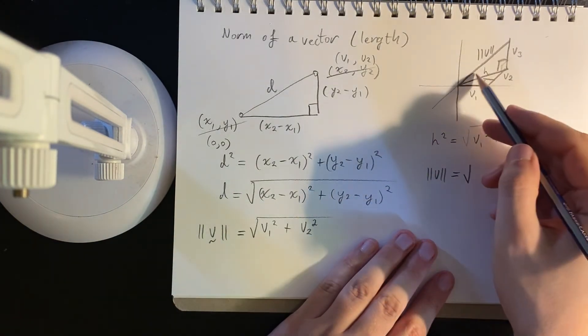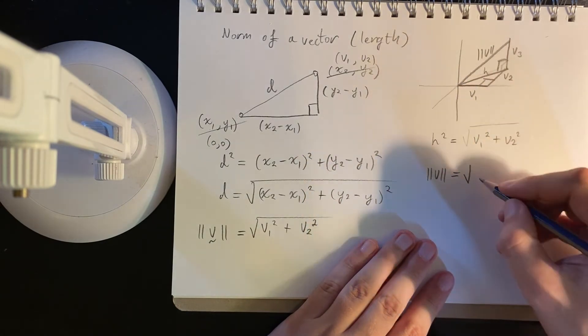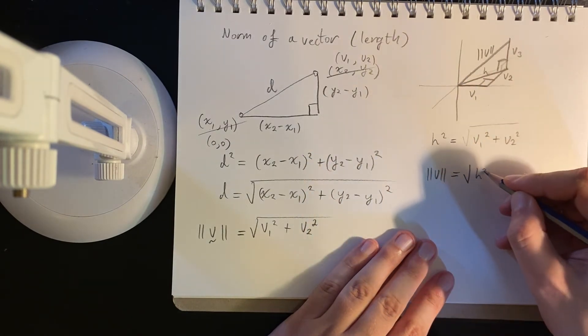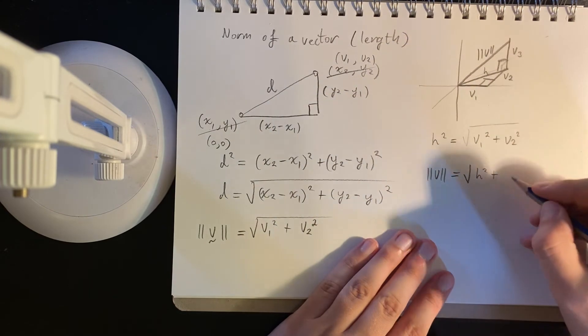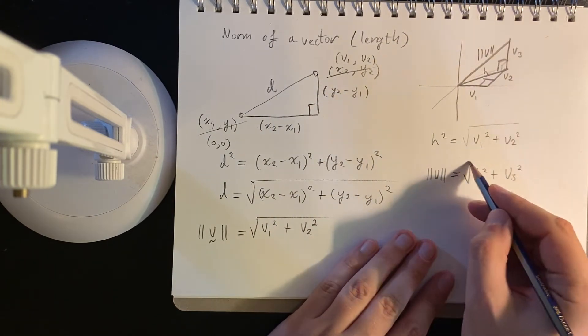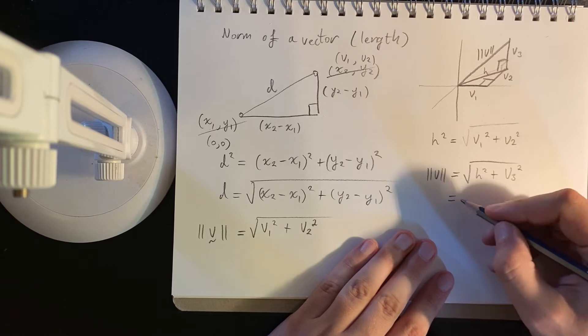is the hypotenuse length squared, plus the third component squared, but really that hypotenuse squared is this one.